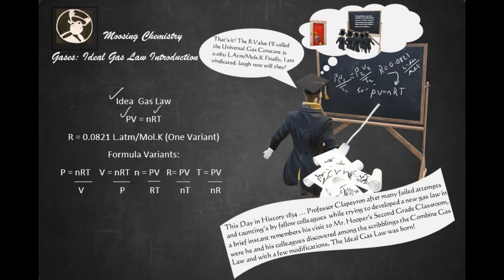Now, the universal gas constant, or the R value, is 0.0821 liters times atm over moles times Kelvin.